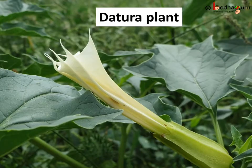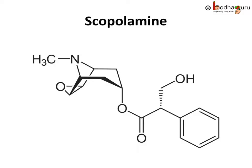This plant is quite commonly seen and we know it as the Tura plant. A very useful alkaloid named Scopolamine is obtained from the flowers and fruit of the Tura plant. It is used to treat motion sickness, nausea, and also used as a sedative. There are many other uses too.